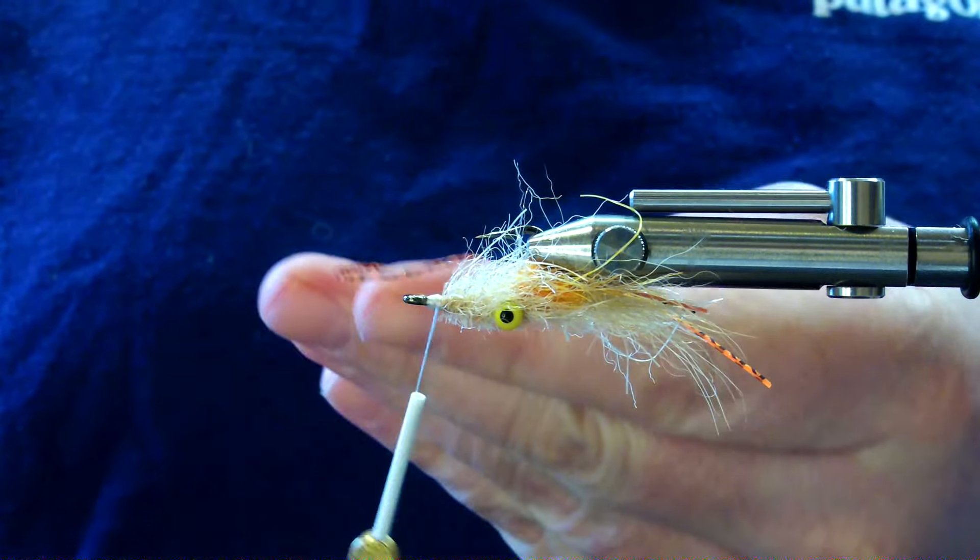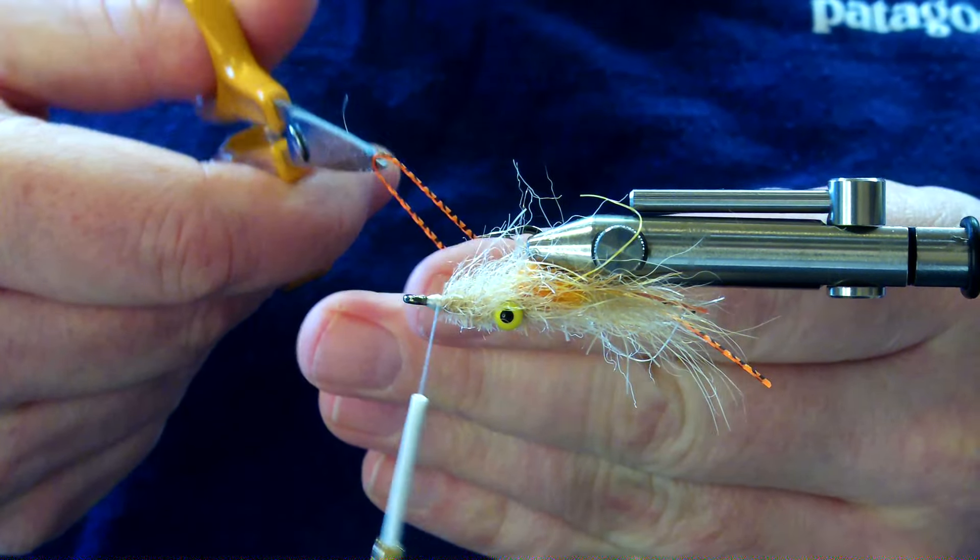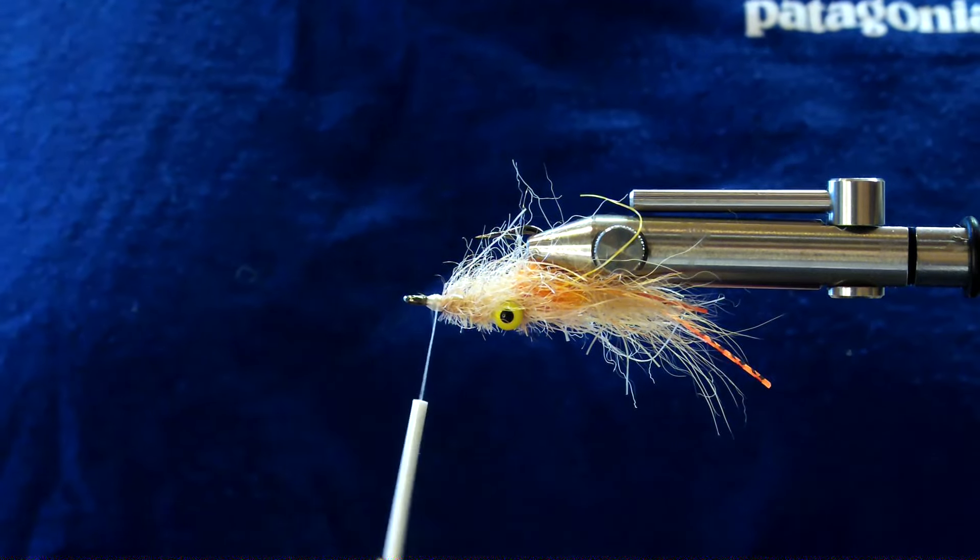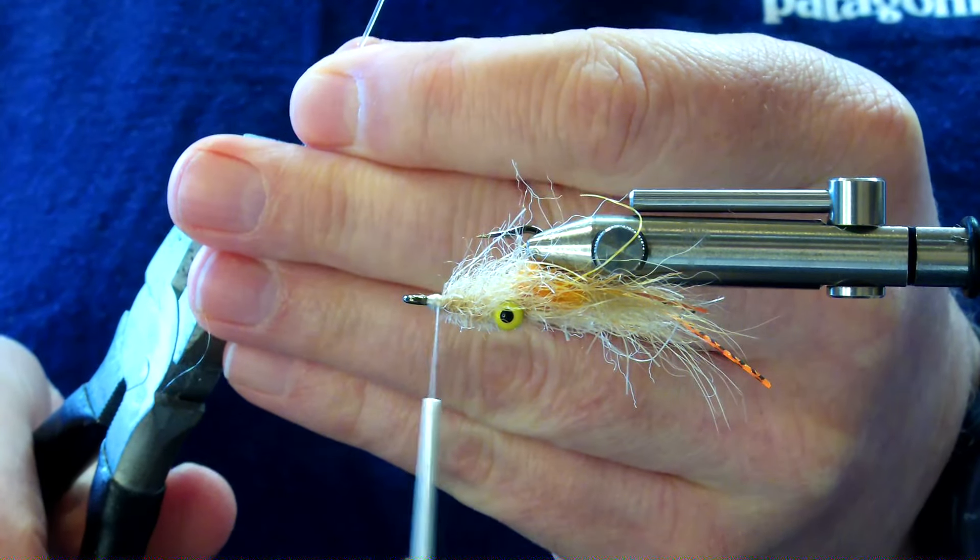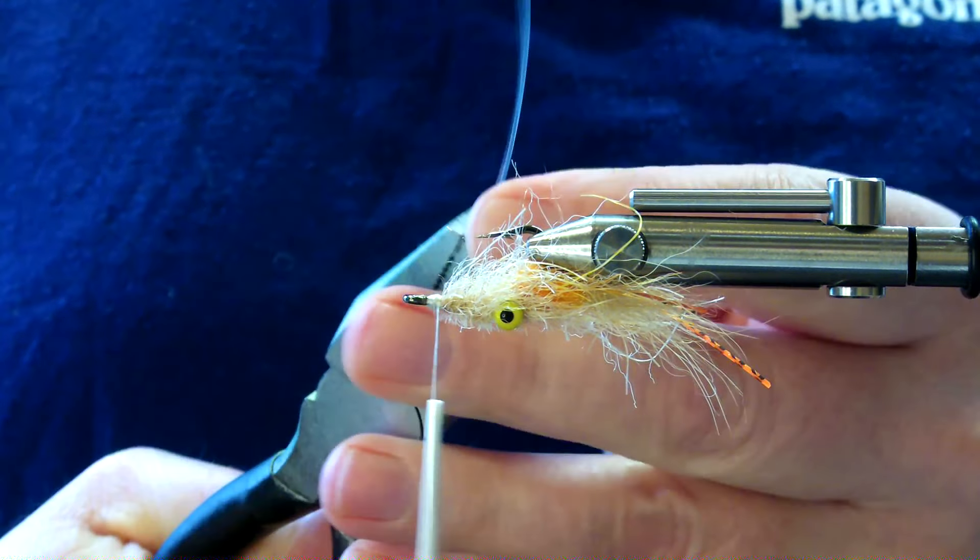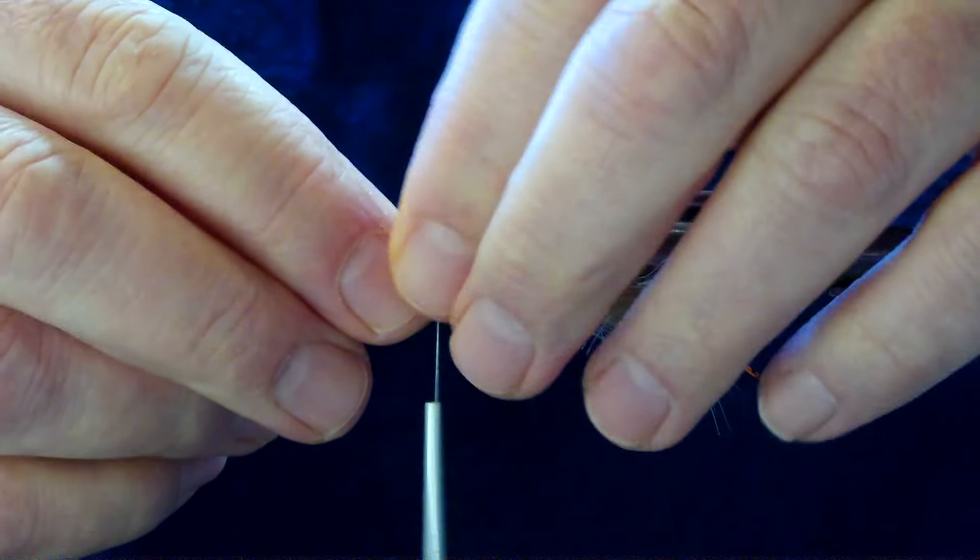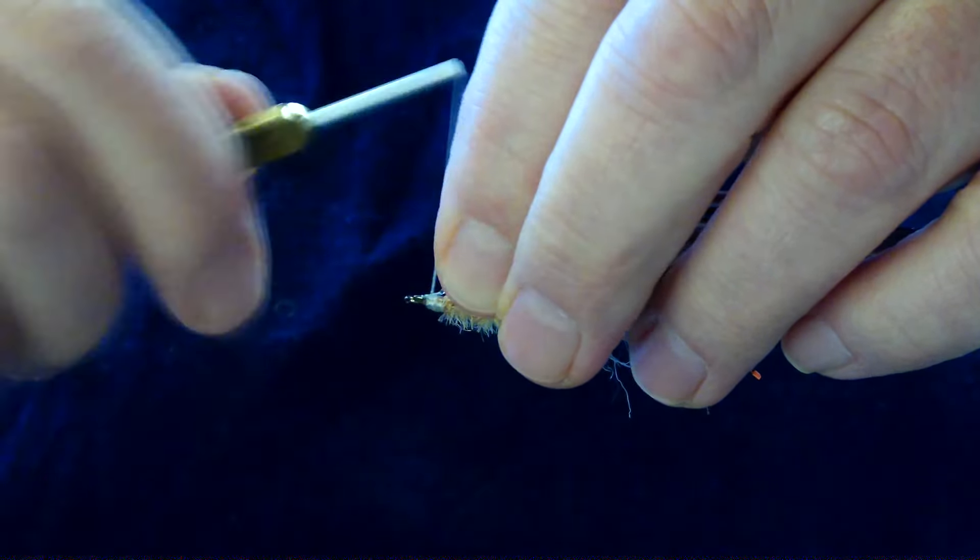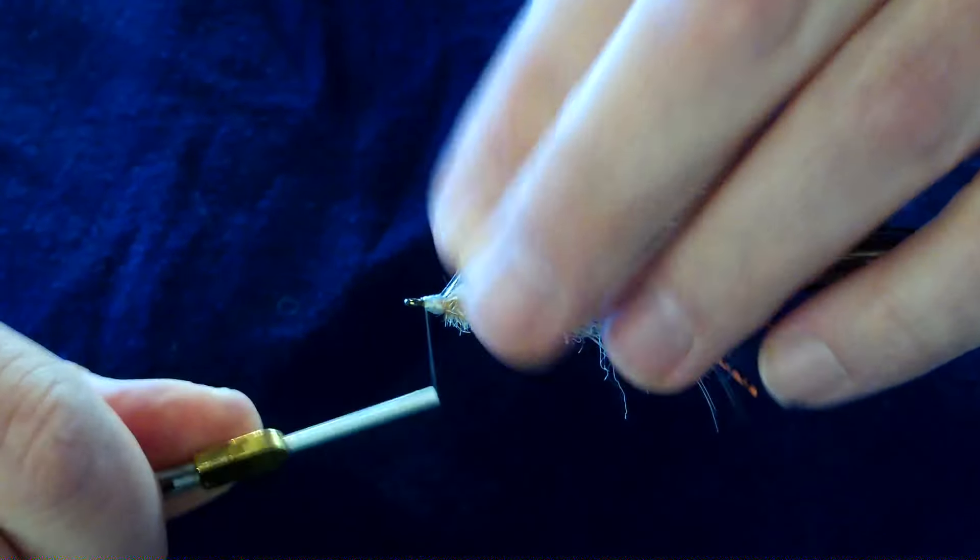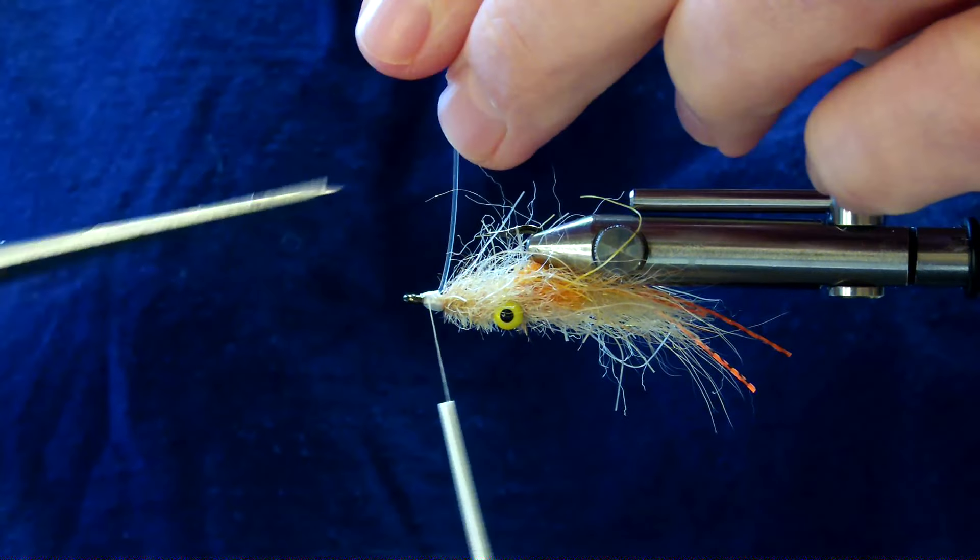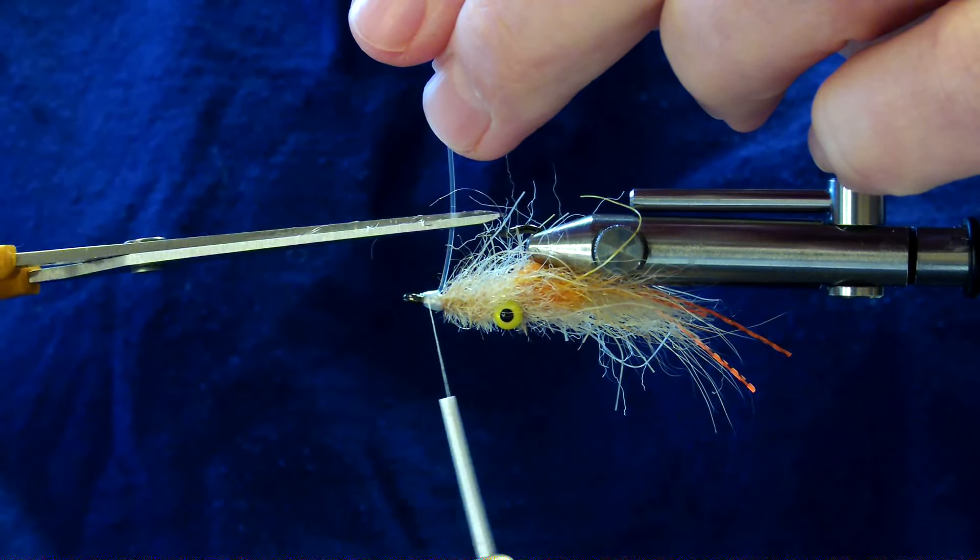Then I'll just take another orange and black barred leg, folding it in half, cutting it in half. But I need a weed guard as well before I tie in those front legs, so 25 pound single prong of that Mason's hard mono. Tie that in, lock it down, trim it off.